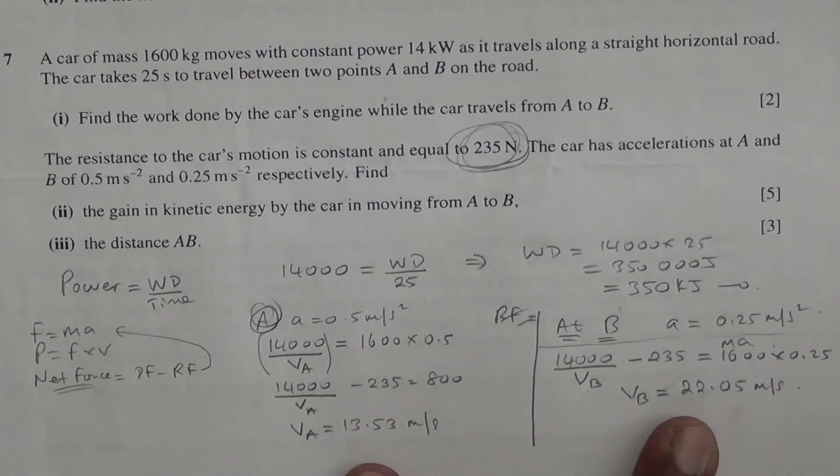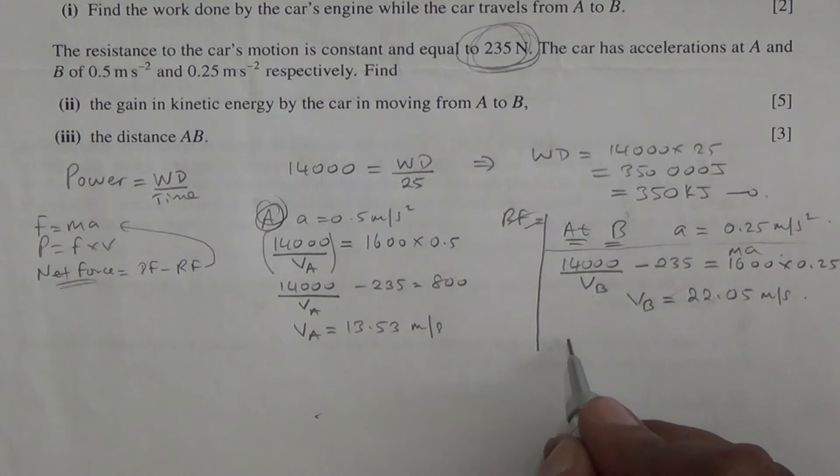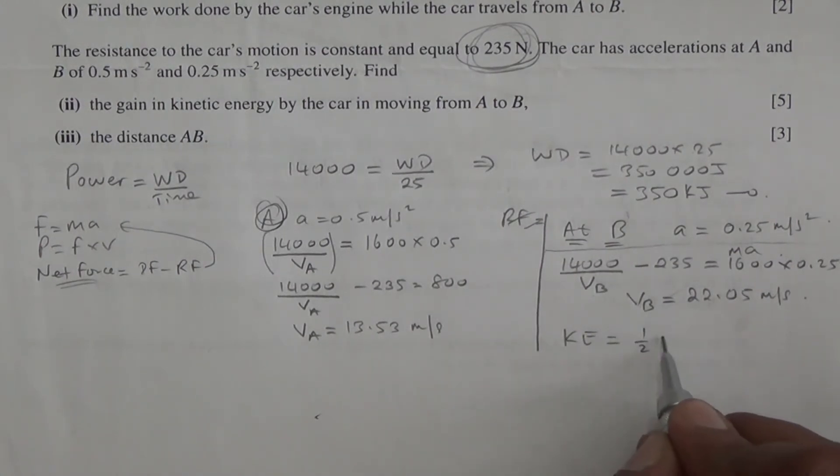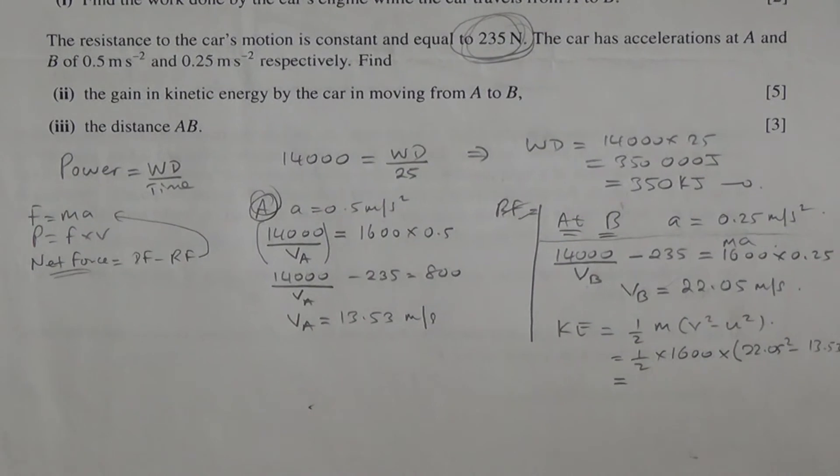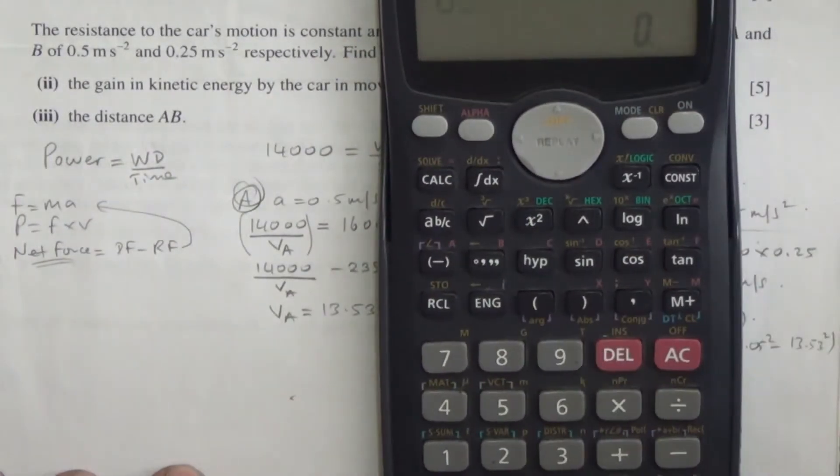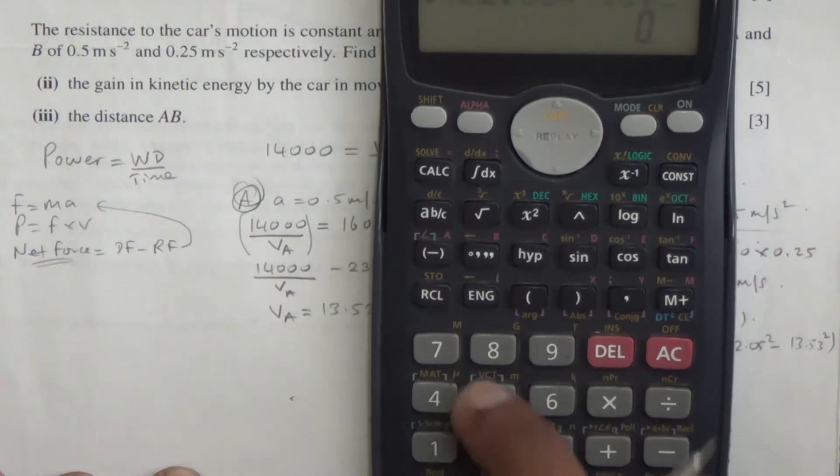These are two very vital pieces of information that we need to be able to find the kinetic energy of a car. So for the kinetic energy, the gain in kinetic energy will be half M into V squared minus U squared. The end speed, the final speed is greater than the initial speed. So we're going to take this as first. Half times 1600 times 22.05 squared minus 13.53 squared.